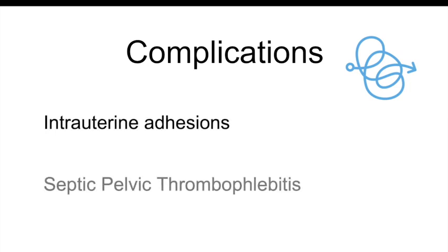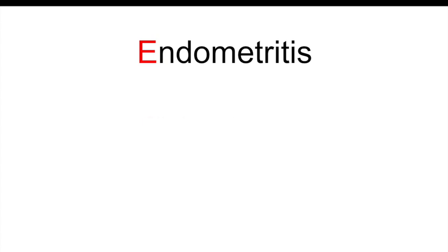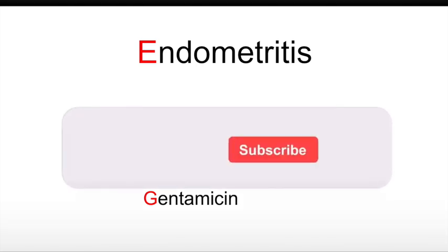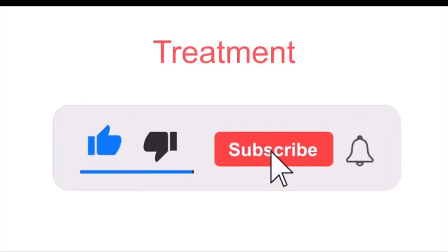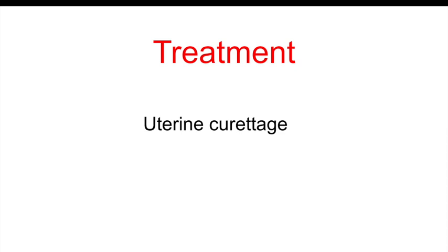Treatment usually includes IV antibiotic treatment. We can remember these drugs with the mnemonic ECG — E for endometritis, C for clindamycin, and G for gentamicin. As previously mentioned, retained products of conception may be a possible cause of endometritis; in this case, curettage may be beneficial. If life-threatening complications such as postpartum hemorrhage unresponsive to medical treatment develop, these patients may also need a hysterectomy.